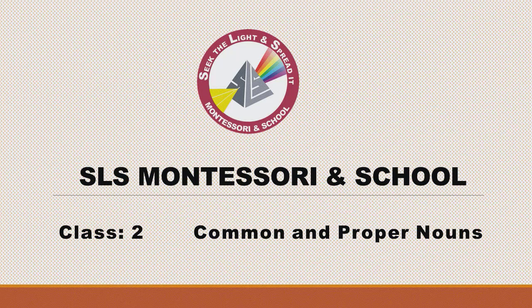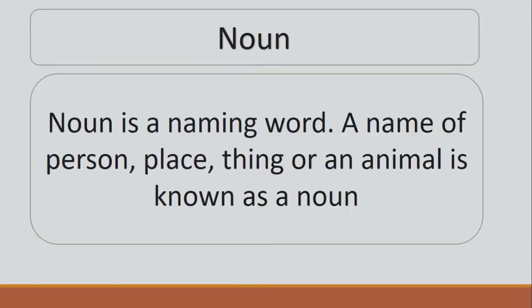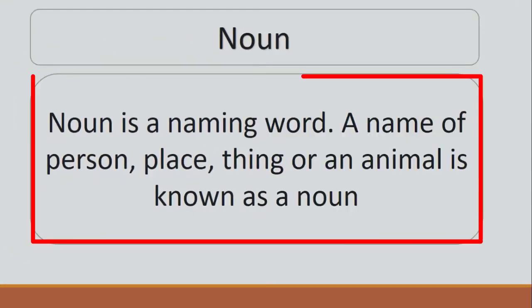Assalamualaikum students, I hope you all are fine. Today in this lecture we are going to study about two different types of a noun. Before that, I would like you to know what actually a noun is. A noun is a naming word — a name of a person, place, thing, or an animal is known as a noun. A name of any person is going to be a noun, like the name of your friends, your cousins, your uncles, your aunts.